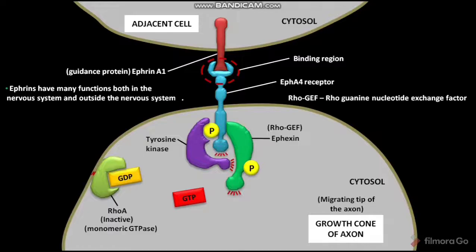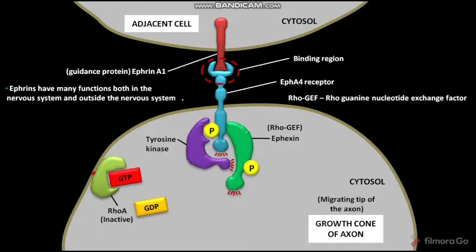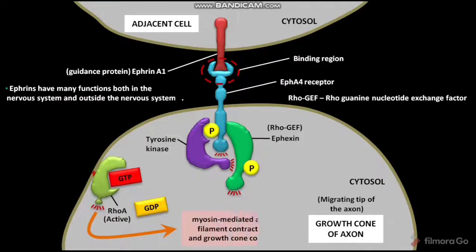The active Afaxin then induces the exchange of GTP for the Rho-A-bound GDP. Now the Rho-A is bound to GTP. Due to this GTP binding, the inactive Rho-A undergoes a conformational change. As a result of this conformational change, Rho-A becomes active. The active Rho-A then induces myosin-mediated actin filament contraction and growth cone collapse.